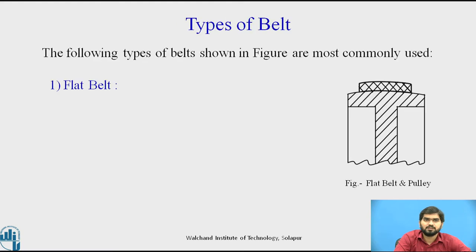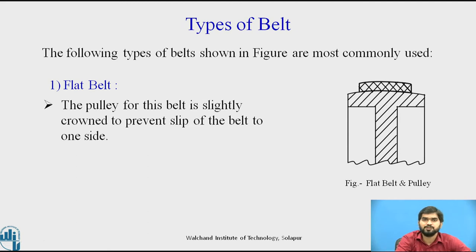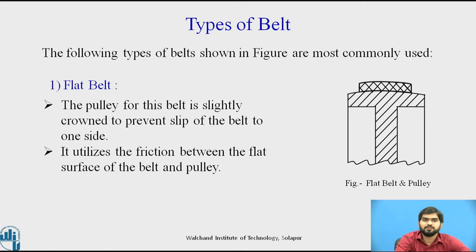Types of belt. First one: flat belt. This is a diagram indicating the flat belt with the pulley. This is a crown-shaped pulley and this is the flat belt. The pulley is slightly crowned to prevent slip of the belt to one side, to avoid slippage of the flat belt on either side. It utilizes the friction between the flat surface of the belt and pulley. Example: belt conveyor — in material handling equipment, flat belt drives are used.